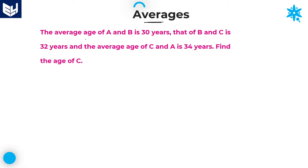The average age of A and B is 30 years. Average age of B and C is 32 years, and the average age of A and C is 34 years. The question is asking us to find the age of C.